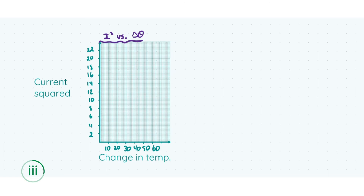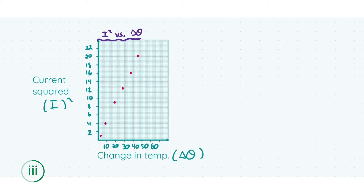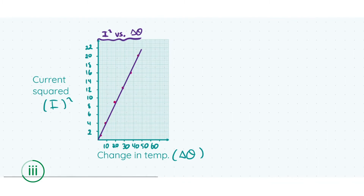Looking at the graph, we're plotting I-squared on one axis versus the change in temperature, delta theta, on the other. After plotting the points from our updated table, we draw a line of best fit. The line of best fit goes through the majority of the points and, crucially, goes through the origin — which is exactly what we need here to verify Joule's law.